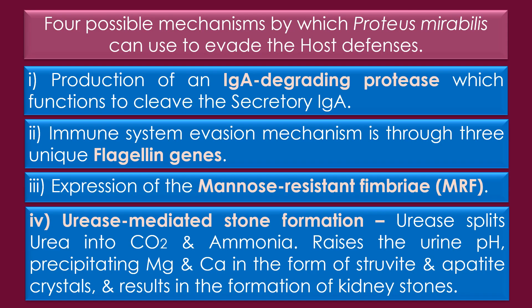There are four possible mechanisms by which Proteus mirabilis can evade host defenses. The first is production of an IgA-degrading protease, which functions to cleave secretory IgA released by the host in an initial response to infection. The second mechanism is through three unique flagellin genes. The third is through expression of the MR/F fimbriae.